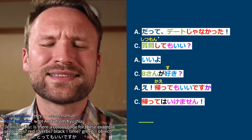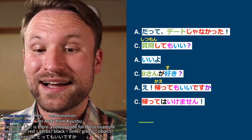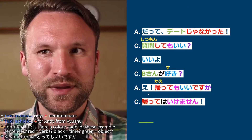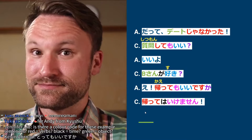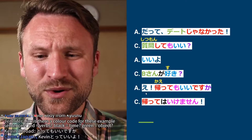Dialogue continues. A: Datte, deeto ja nakatta. C: Shitsumon shite mo ii? A: Ii yo. C: B-san ga suki? A: E? C: Kaette mo ii desu ka? A: Kaette wa ikemasen. In English: 'Because, as I said, it wasn't a date.' 'Can I ask a question?' 'Sure.' 'Do you like B?' 'What?' 'Can I go home?' 'I forbid you to go home.' (Kaette wa ikemasen is our next section.)